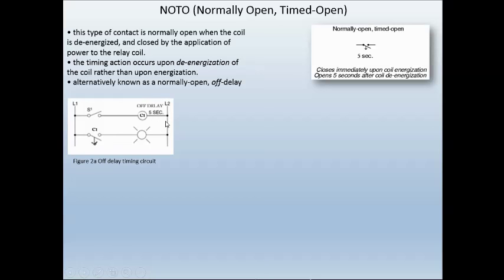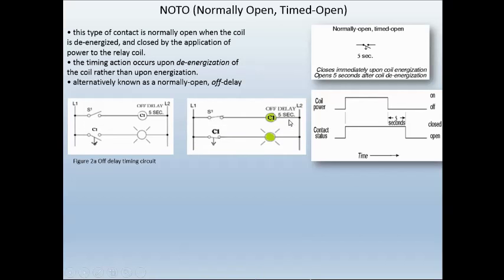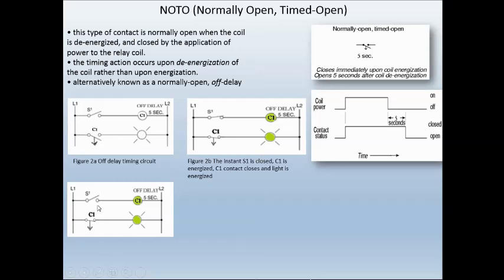Let's look at its functionality. In this drawing, we have our switch and here's our C1 coil. This time it is an off delay — very important that we know that, and it needs to be noted so we know how this coil and contact will react. I want you to look at the arrow pointing down, which tells me that when the timing operation is completed it will come down. We have the coil de-energized at first — coil power is off, contact status is off. When we close the switch and energize the coil, at that very same time, the contact for C1 closes.